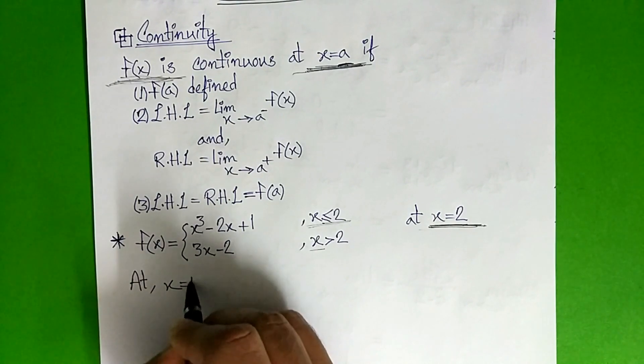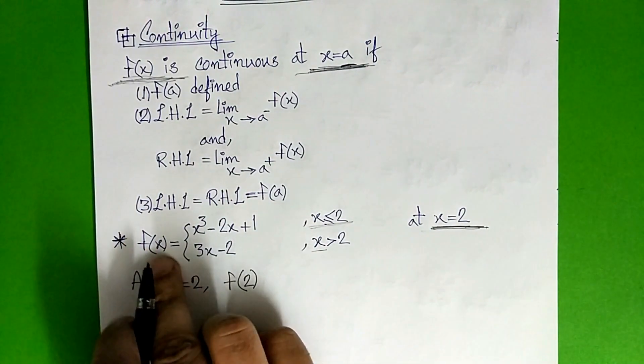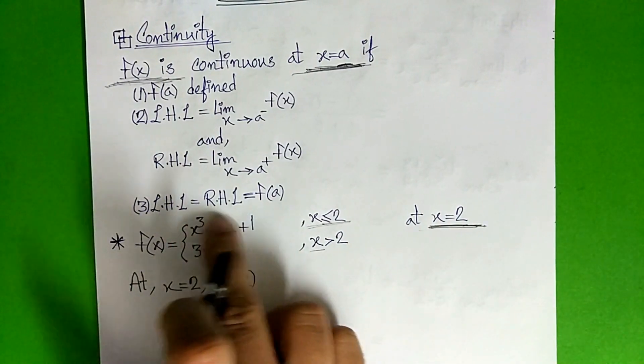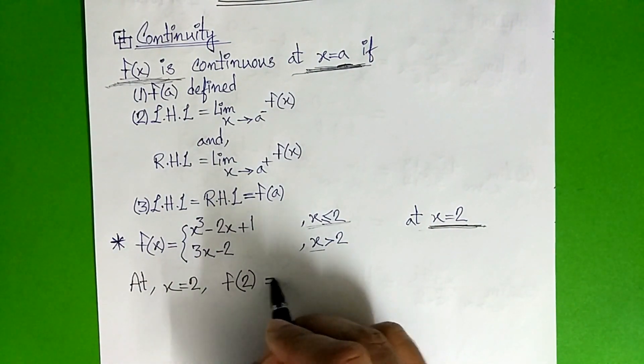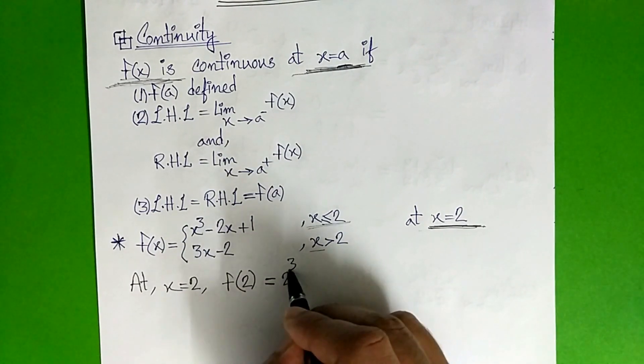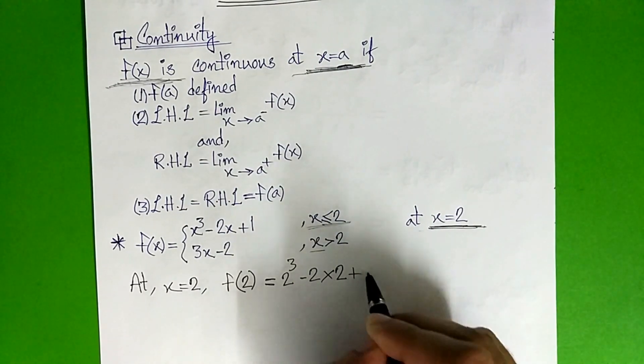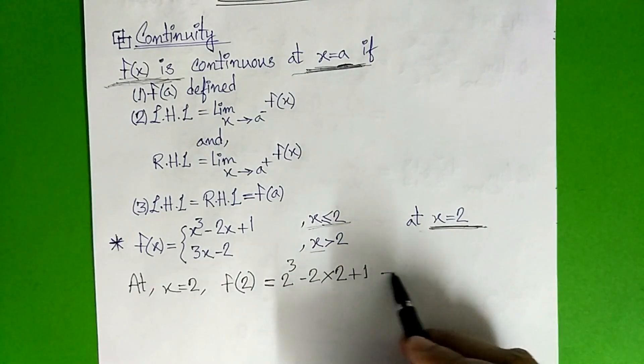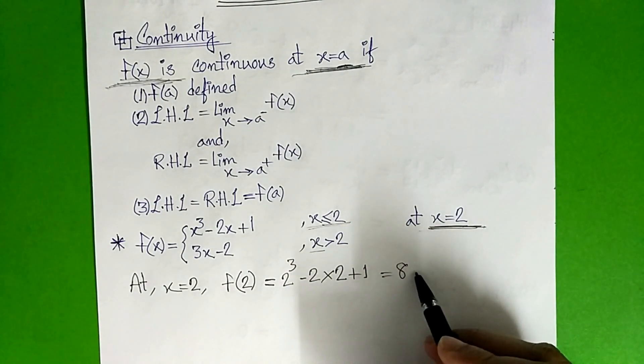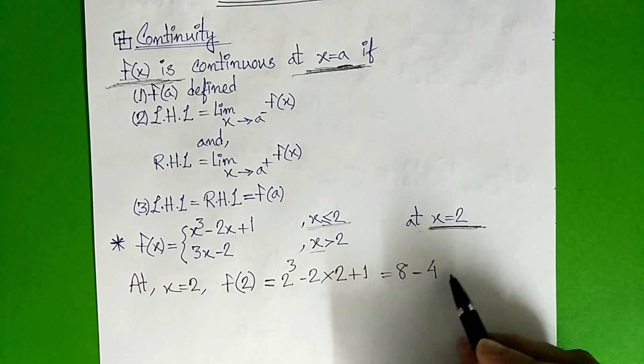At x equal to 2, so x equal to 2, it has the function of x equal to 2. So you can write 8 minus 4 plus 1.